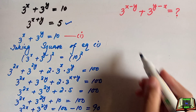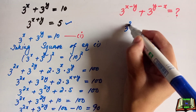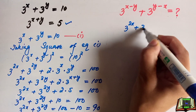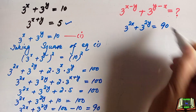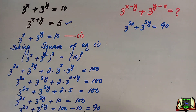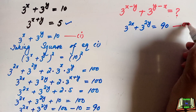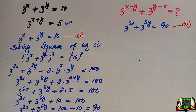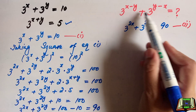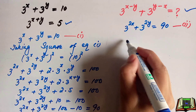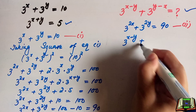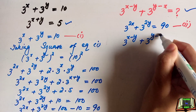Let's write this equation once again: 3 to the power 2x plus 3 to the power 2y equals 90. We got this and let's name it equation 2. Now we have to find the value of 3 to the power x minus y plus 3 to the power y minus x.